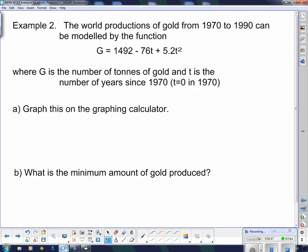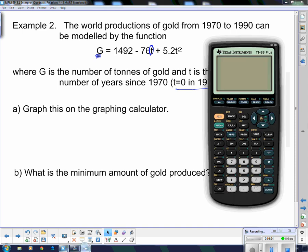So now let's have a look at a different one where we're going to have to do a little more work for it. Example 2: the world productions of gold from 1970 to 1990 can be modeled by this function. G = 1492 - 76t + 5.2t² where G is the number of tons of gold, so that's how much gold we're producing in tons. And t is the number of years since 1970. So t in 1970 would be 0, and in 1971 it would be 1, and in 1972 it would be 2 and so on. So this asks us to graph it on our graphing calculator.